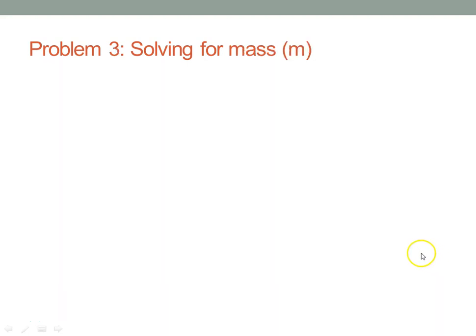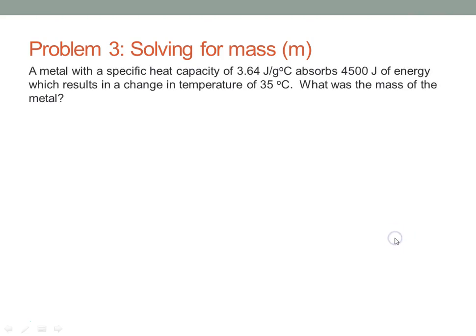We're ready for another problem — this time we'll solve for mass. The question is: a metal with a specific heat capacity of 3.64 joules per gram degree C absorbs 4500 joules of energy, and that results in a change in temperature of 35 degrees C. What was the mass of the metal? Notice in this problem we're not given T2 and T1 — we're just given the delta T.